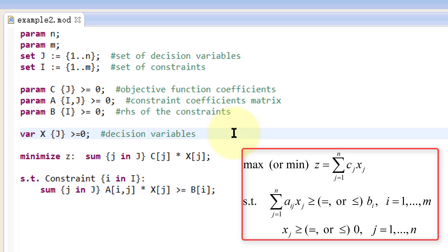After that, we define xj as the decision variables. Variables by default are assumed to be real numbers. This is a minimization problem. Z is equal to the sum of cj times xj for every j.